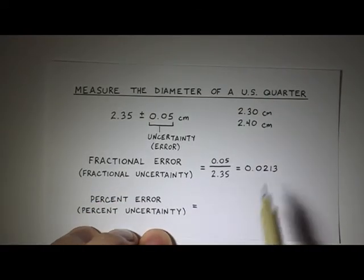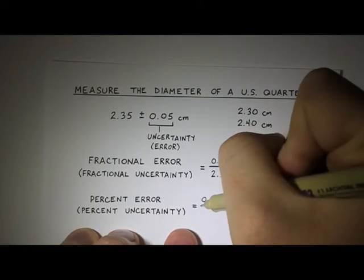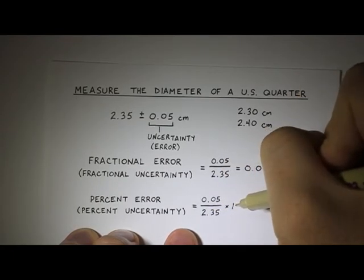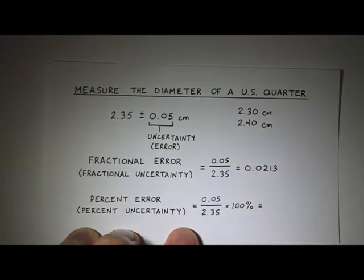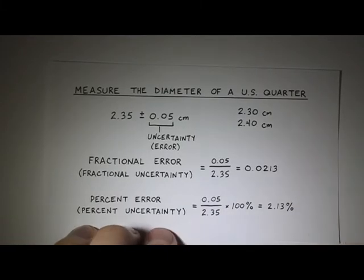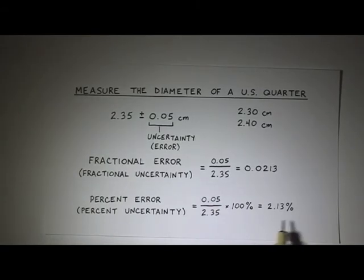So that's my fractional error. But perhaps a better way to do this would be to do the same thing, except multiply it by 100% to get my error as a percent. So when you do that, you end up getting 2.13%. So compared to the actual measurement itself, we can see that the error is pretty small. If you have a large percent error or percent uncertainty, then that means that there's a larger part of the measurement that you're uncomfortable with.